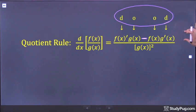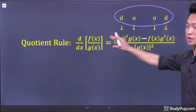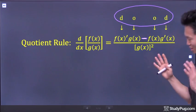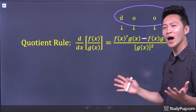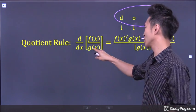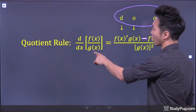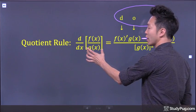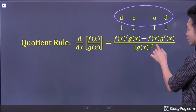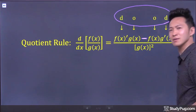And that's it for the numerator. Now for the denominator — easy. All we have to do is square the bottom guy. So if the bottom guy is the function g of x, we square that and we get the square of g of x.